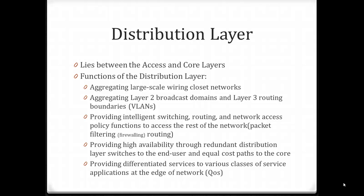At the distribution layer — that middle layer — we have a lot going on. The distribution layer is aggregating large-scale wiring closet networks. It aggregates Layer 2 broadcast domains and Layer 3 boundaries with our VLANs. It provides intelligent switching, routing, and network access policies. It does packet filtering or firewall routing, and provides quality of service. We try to provide high availability and resiliency at the distribution layer by using redundant switches and equal cost paths to the core.